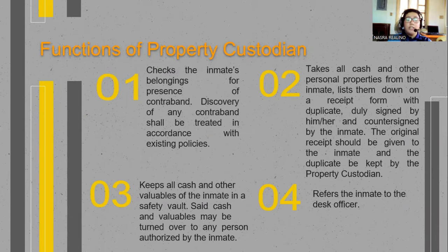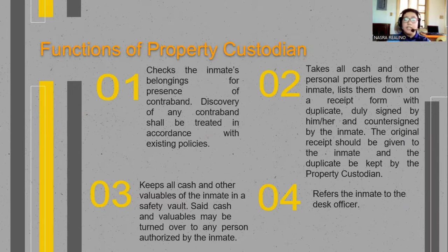Third, keeps all cash and other valuables of the inmate in a safety vault. Cash and valuables may be turned over to any person authorized by the inmate. And fourth, refers the inmate to the desk officer.